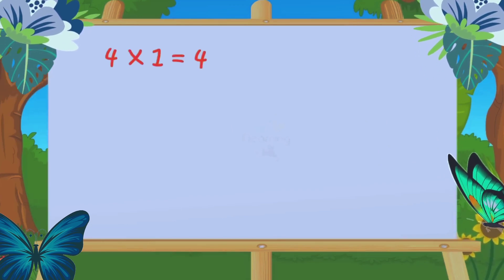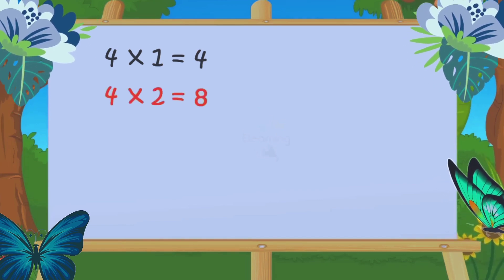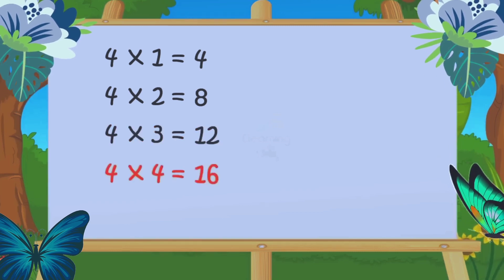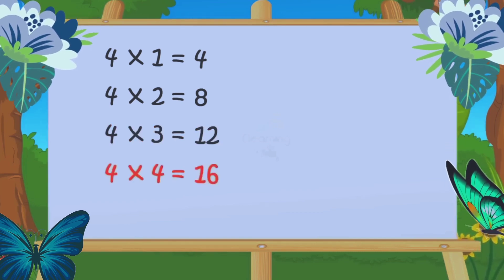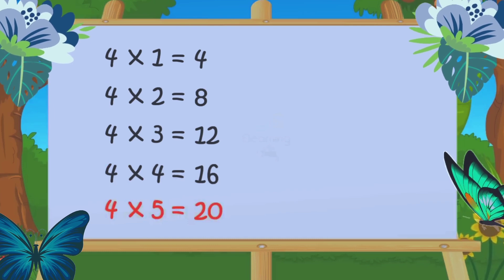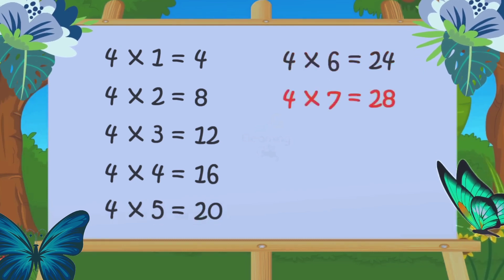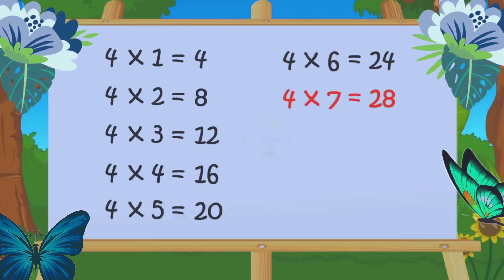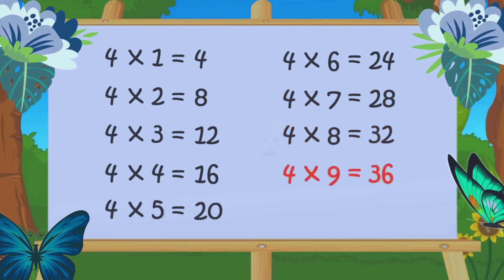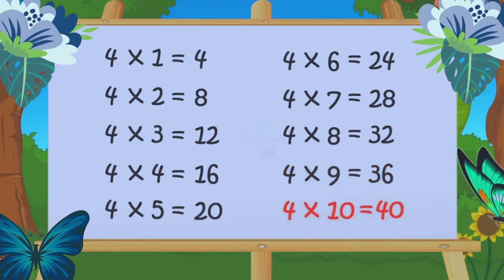4 1s are 4, 4 2s are 8, 4 3s are 12, 4 4s are 16, 4 5s are 20, 4 6s are 24, 4 7s are 28, 4 8s are 32, 4 9s are 36, 4 10s are 40.